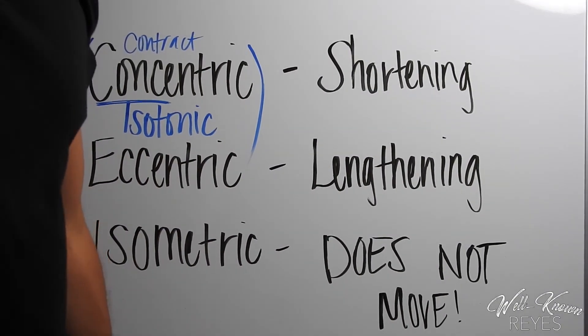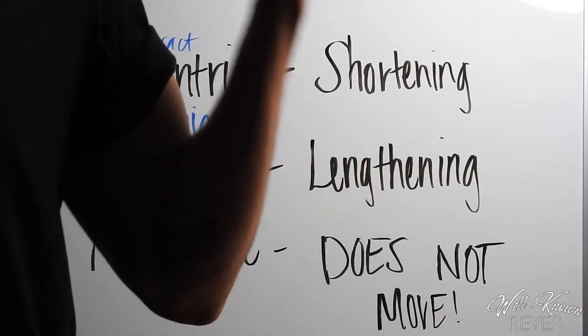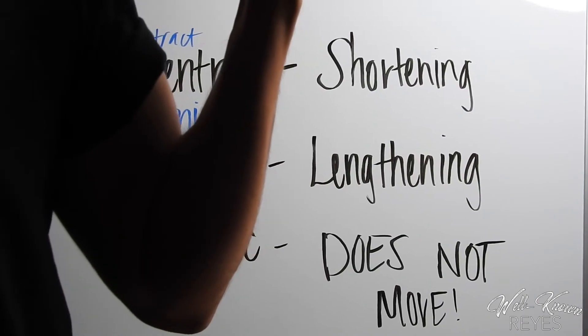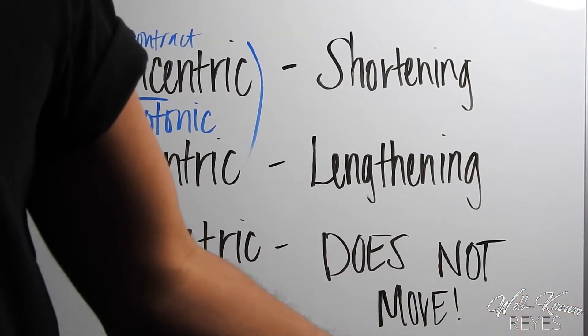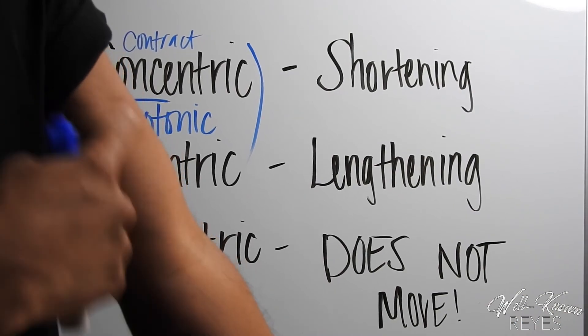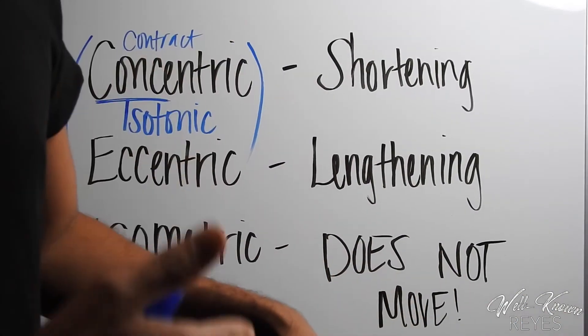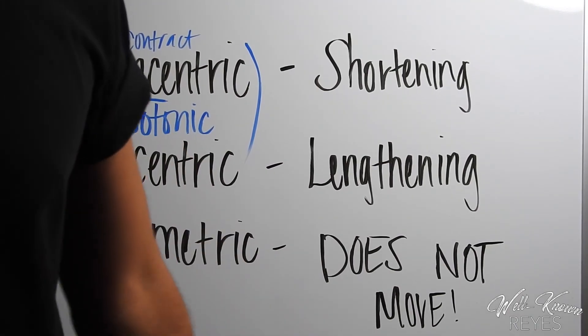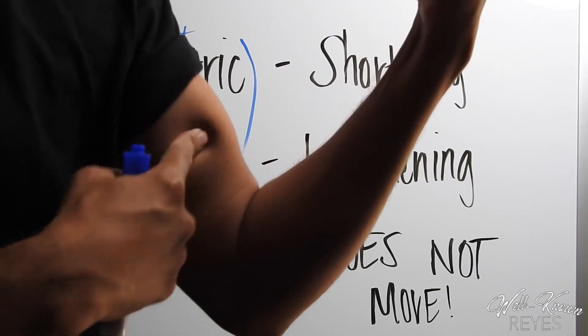It's because when we do the concentric contraction, it is actually on the descending, on the eccentric motion, that our muscle fibers tear. Then we consume proteins and it helps build that muscle back up, and then we get hypertrophy, what we're all after—those gains. We'll talk about that in another video.